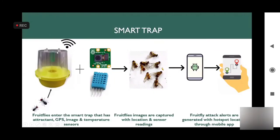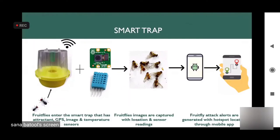This is our trap. It contains attractant materials and sensors including a camera, temperature sensor, and motion sensor. The trap has a hole, and fruit flies enter due to the attractant material. When a fruit fly's motion is detected, the motion sensor captures the detection, and the camera captures an image while the temperature sensor reading is also recorded.